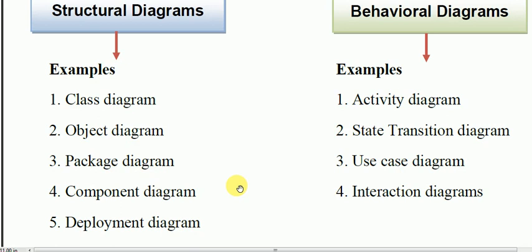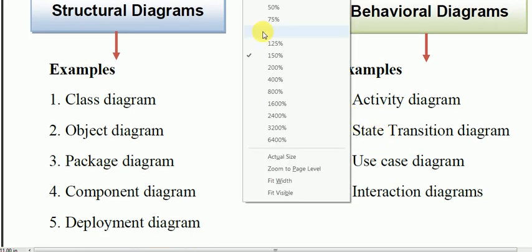The behavioral or functional diagrams represent the dynamic aspects of the system. There are four kinds: activity diagram, state transition diagram, use case diagram, and interaction diagram. These are the four kinds of behavioral or functional diagrams that UML provides.